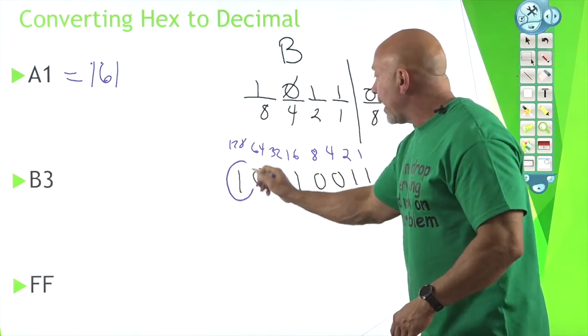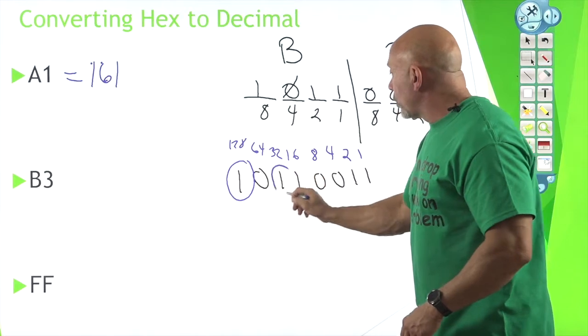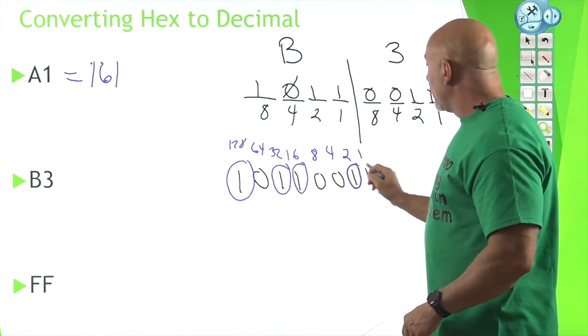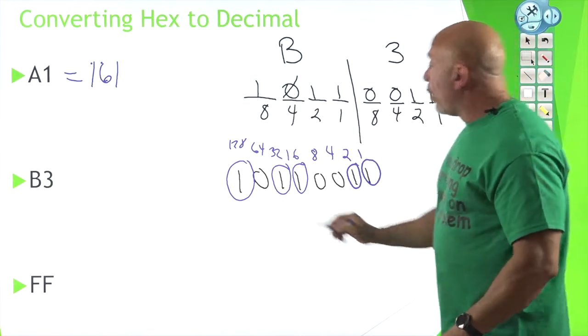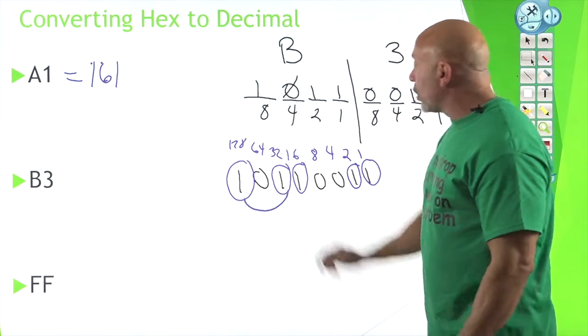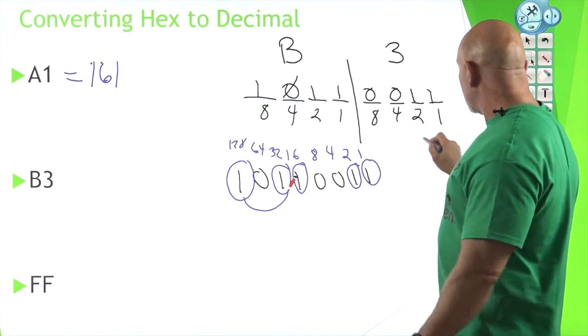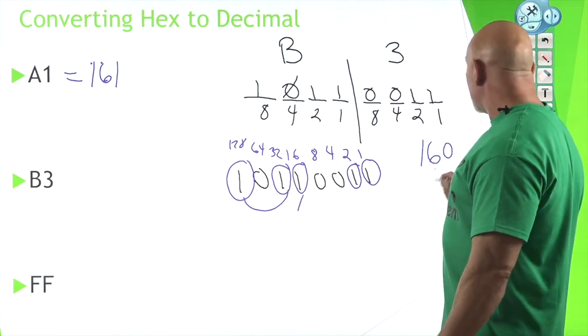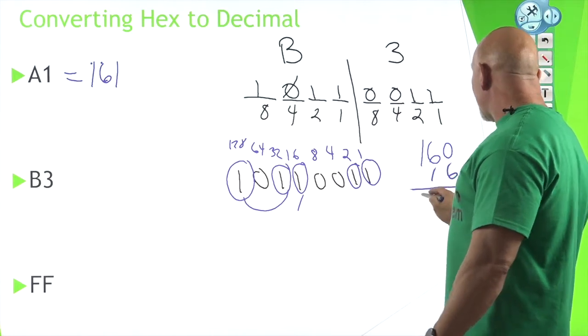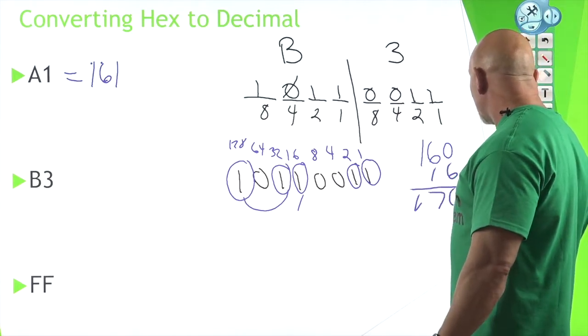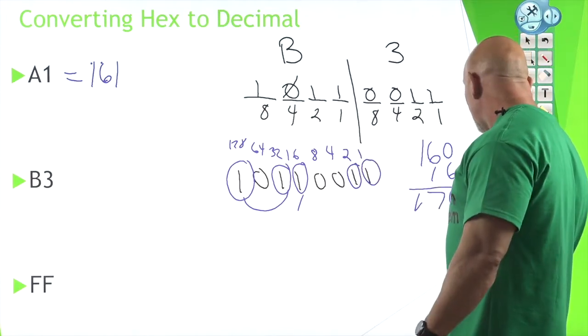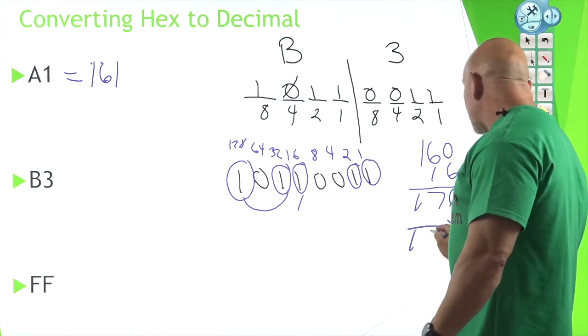So what are the numbers that we need to add? We need to add the 128, the 32, the 16, the two, and the one. Well, we already know that 128 and 32 is 160. So if we add 16 to that, that's 176. Okay, and then we add three, two and one is three. That's 179.